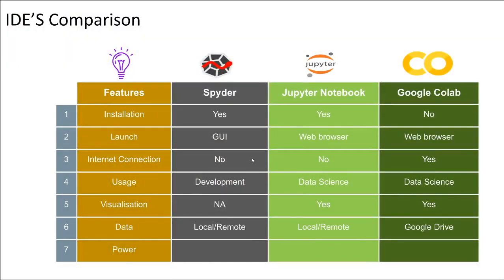The next feature is data. On Spyder and Jupyter Notebook, you can read data from remote systems, remote databases, or from data available on your local laptop or desktop. But for Google Colab, you should have your data available in Google Drive.